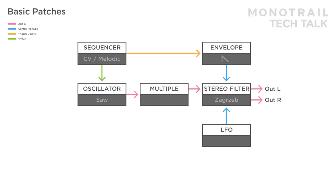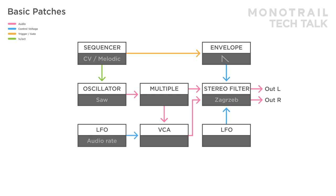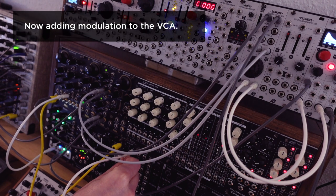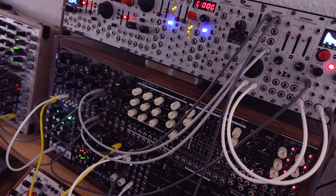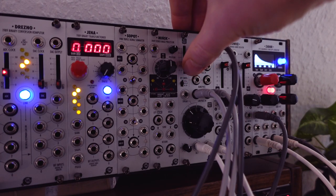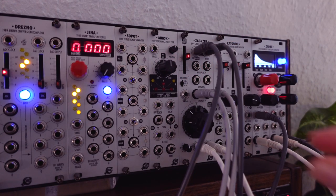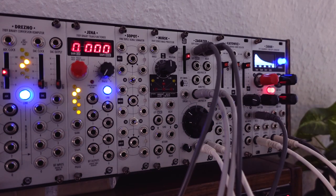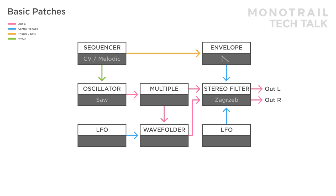Effects are great, but anything that alters the waveform slightly can work. For example, you can patch a copy of the oscillator into a VCA and use an audio rate LFO to subtly modulate that VCA. This creates slight alterations to one side of the audio as well, and can lead to great stereo results. And as another example, a simple wave folder modulated with a slow LFO is used to create a stereo signal.